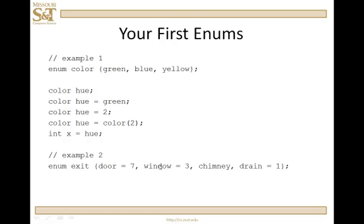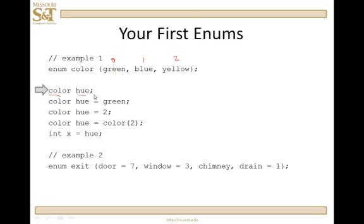As an example, with the enumeration color, I have enumerators green, blue, and yellow, and their values are 0, 1, and 2. I can create a variable of type color and name it hue — it's just like any other declaration. I can give a value to hue upon creation if I desire, setting it to any enumerator in that enumeration type: green, blue, or yellow. Or I can leave it unspecified.